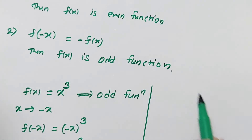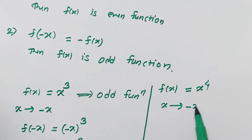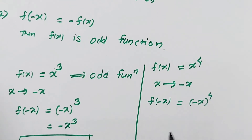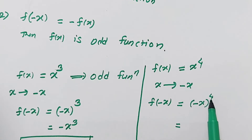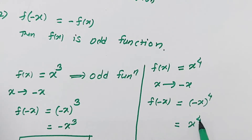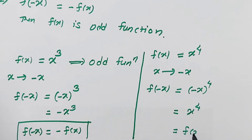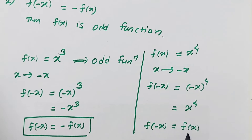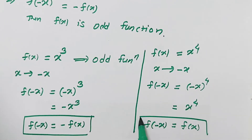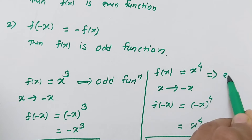Now we take another example. Suppose f of x equals x raised to the power 4. We replace x by minus x, then f of minus x equals minus x raised to the power 4. We know that minus 1 raised to the power 4 is plus 1, because an even power of minus 1 gives plus. So it becomes x raised to the power 4, which is nothing but f of x. That means f of minus x equals f of x, so the function x raised to the power 4 is an even function.